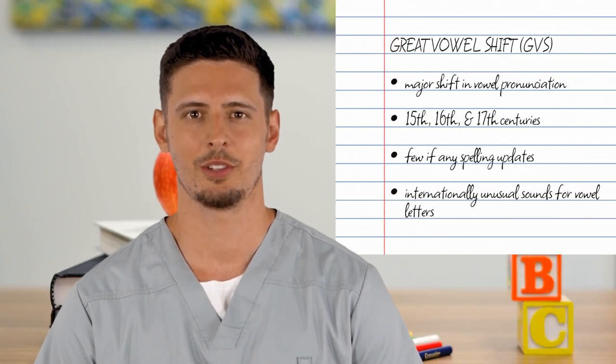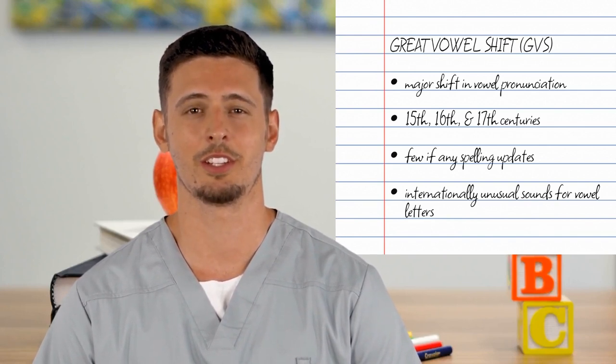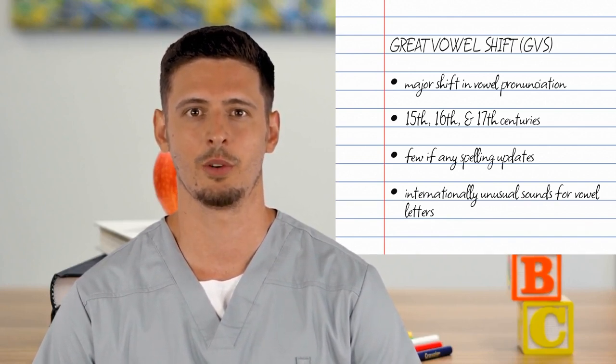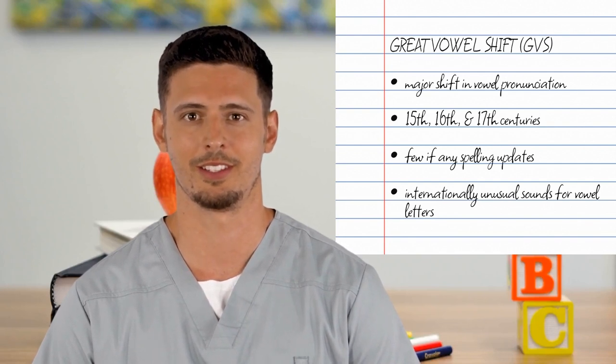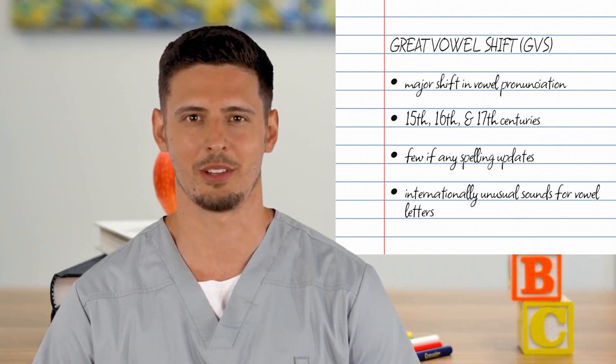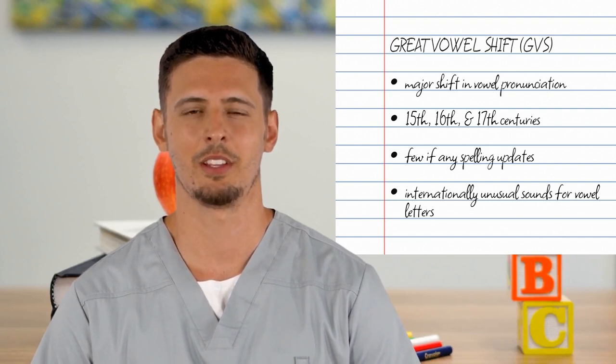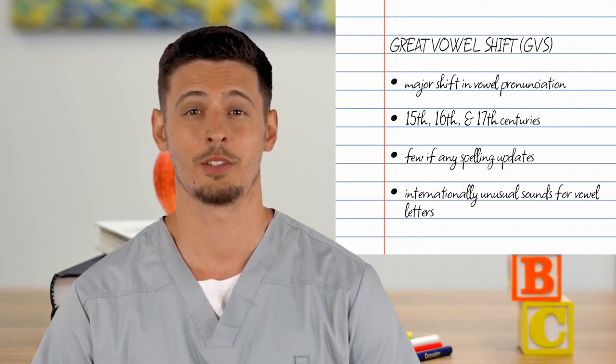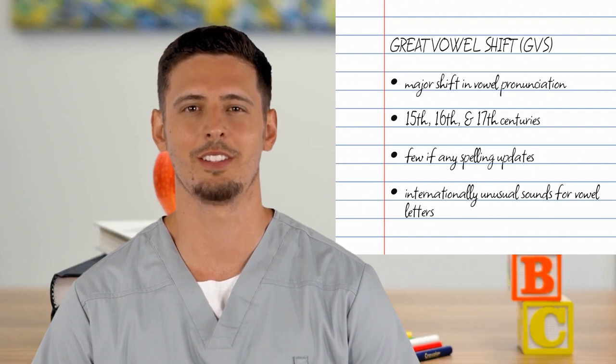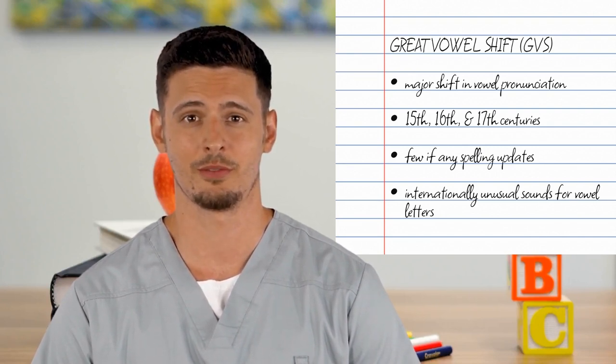A major factor in the transition from Middle English to Modern English was the Great Vowel Shift. This was a dramatic and systematic change in the pronunciation of vowels, which unfolded throughout the 15th, 16th, and 17th centuries. Unfortunately, spellings of the affected sounds were seldom if ever updated to reflect this shift. This means that the five vowel letters A, E, I, O, and U are now frequently associated with sounds that speakers of most other Latin alphabet languages would find bizarre.